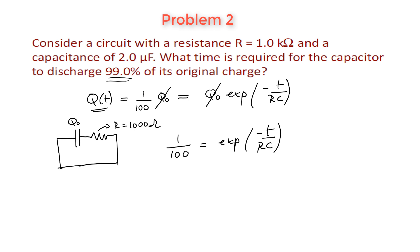So this expression we're left with 1 over 100 equals exponential minus T divided by RC. And this is what they're asking for. They're asking for the time.